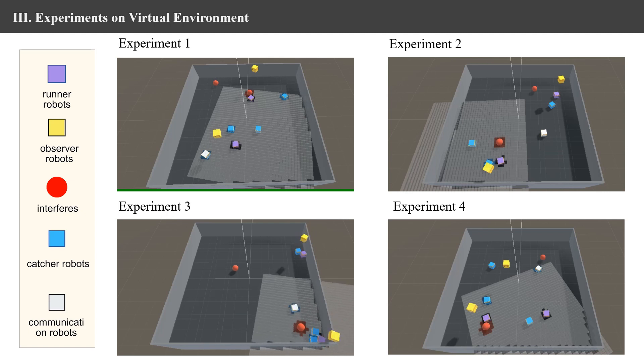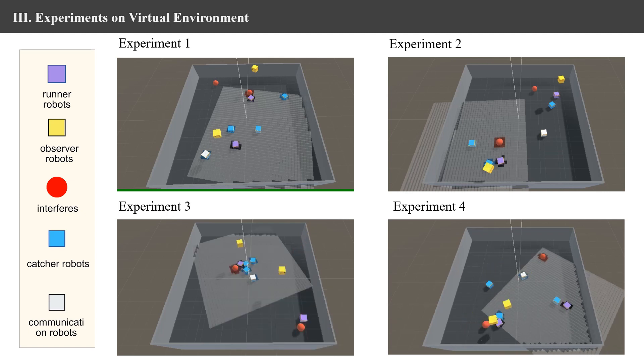The fourth experiment shows another case. We can see the two catcher robots on the left side of the screen tracking the runner robot one after the other, and the robot on the right also follows the runner robot closely. Eventually, the catcher robots are successful again.